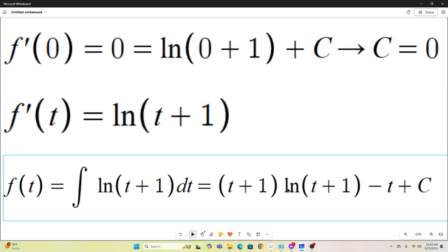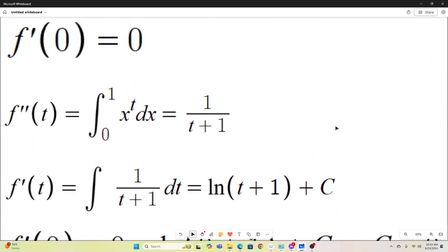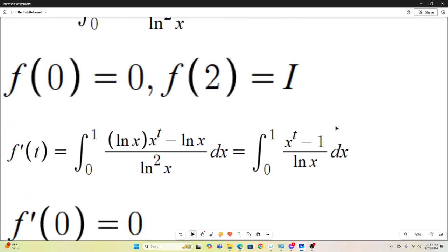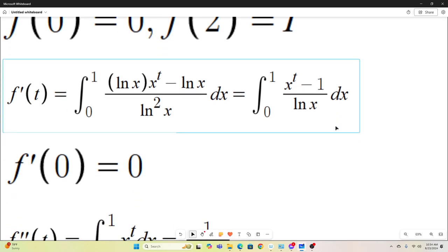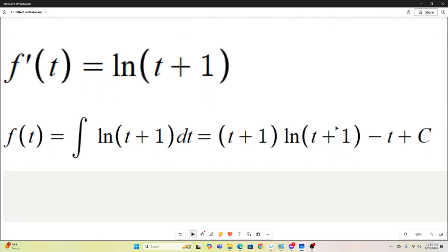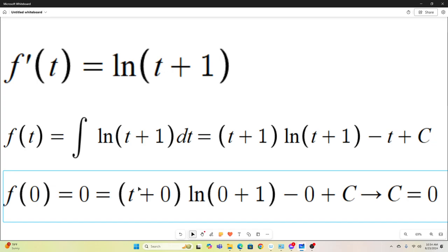That's equal to t plus 1 quantity t plus 1 times natural log of t plus 1. And then all of that minus t and then plus C. Again, from way back up at the top, at the very beginning, we know that f evaluated at 0 is equal to 0. So again, we can use that. So we have f of 0 is equal to 0, which is equal to this expression where t is 0. That's this.